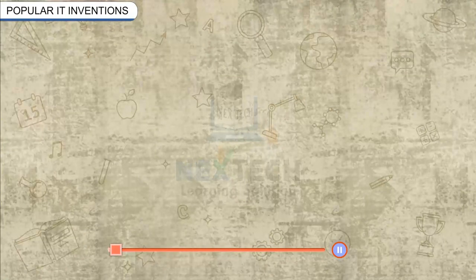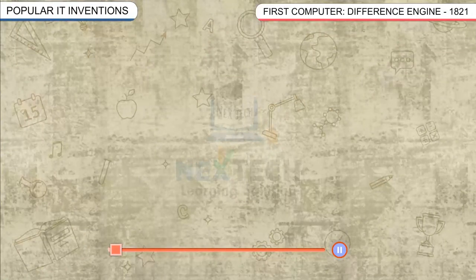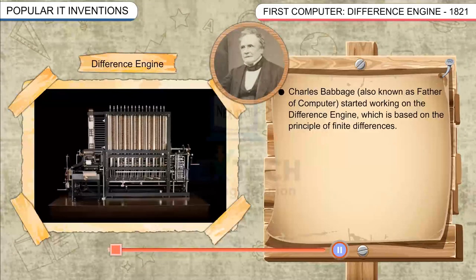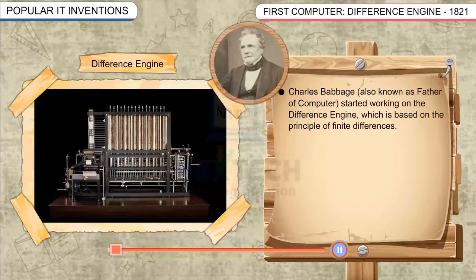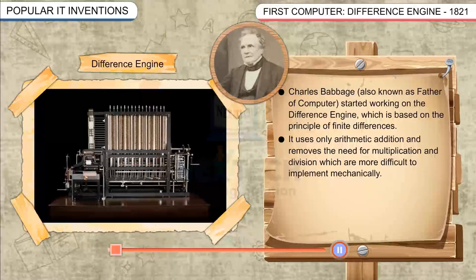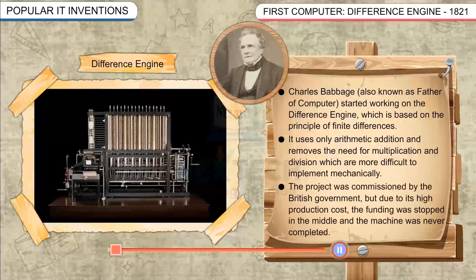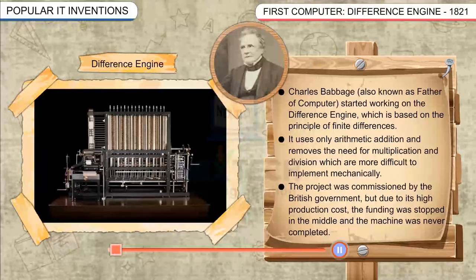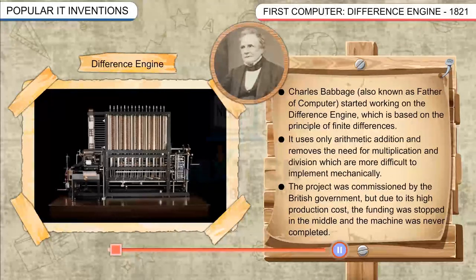Popular IT Inventions: First Computer — Difference Engine, 1821. Charles Babbage, also known as the Father of Computer, started working on the Difference Engine, which is based on the principle of finite differences. It uses only arithmetic addition and removes the need for multiplication and division, which are more difficult to implement mechanically. The project was commissioned by the British government, but due to its high production cost, the funding was stopped and the machine was never completed.